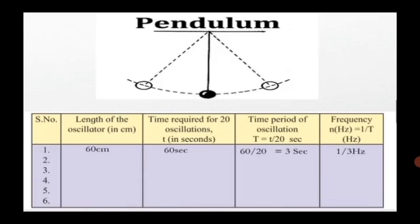Then suspend the pendulum freely from a support. Now swing the pendulum and with the help of a stopwatch record how many seconds are required for 20 oscillations. Repeat this procedure four or five times decreasing the length of the pendulum by 10 centimeters.